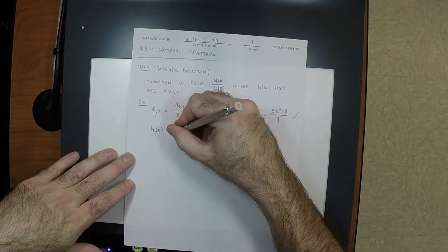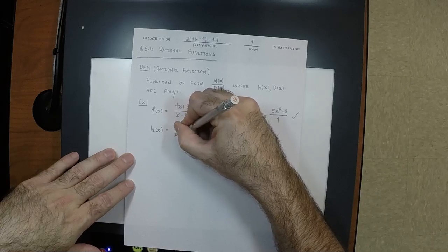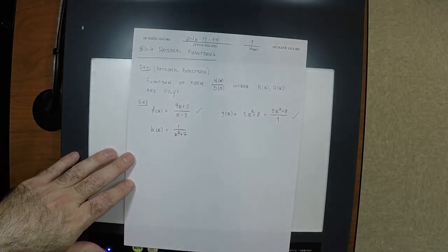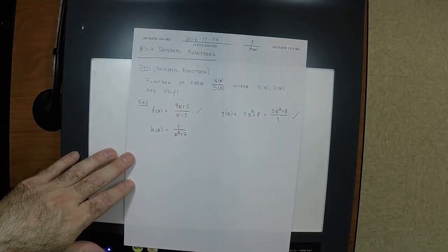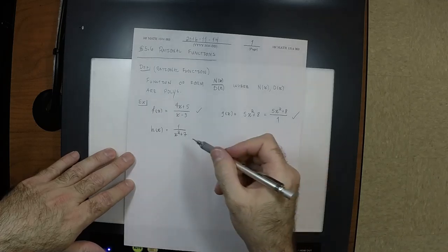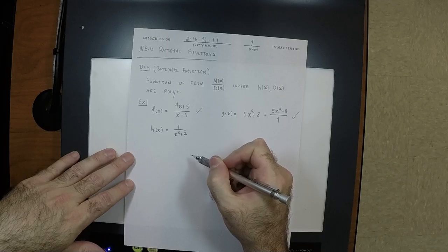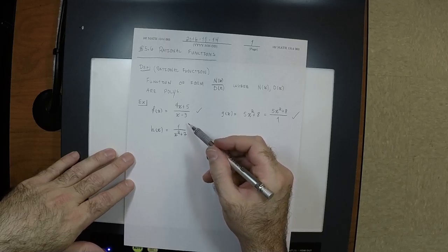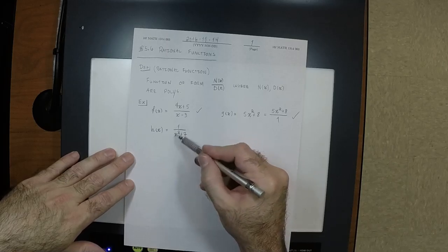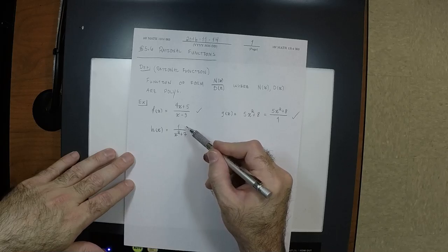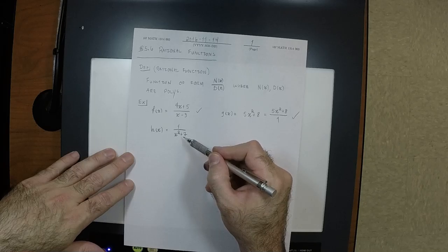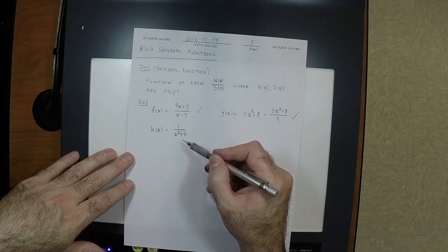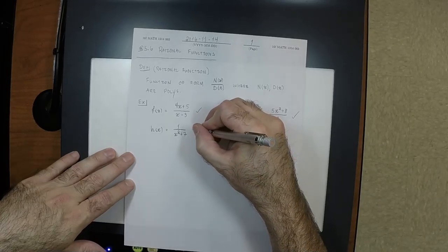How about h of x equals 1 over x squared plus 7 — is this rational? It's not a polynomial, but the numerator is a polynomial of degree 0 and the denominator is a polynomial of degree 2, so this is the ratio of two polynomials. Yes, this is a rational function.